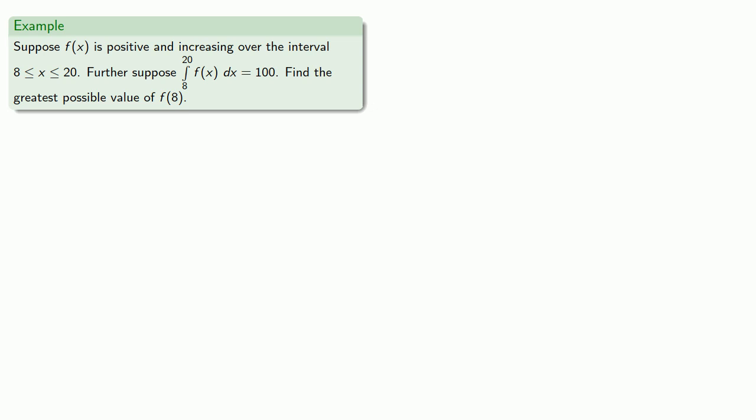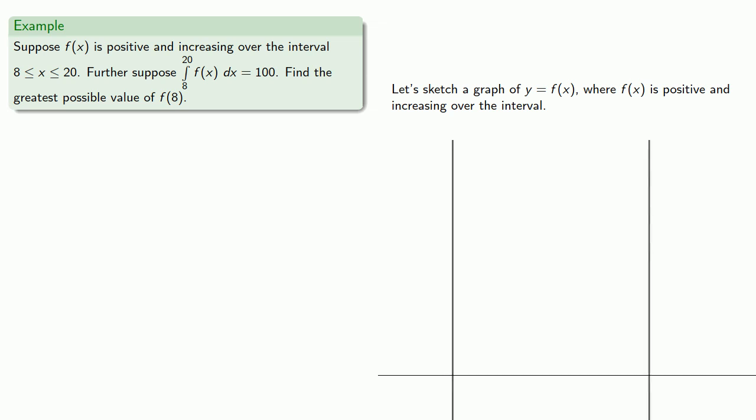So let's sketch a graph of y equals f of x, where f of x is positive and increasing over the interval. So if the interval starts at x equals 8, runs to x equals 20, and f of x is positive and increasing.